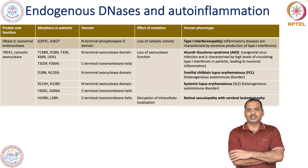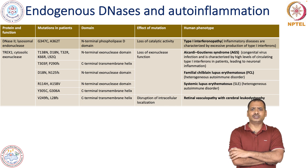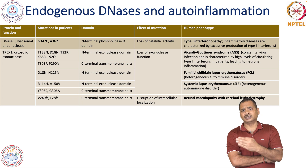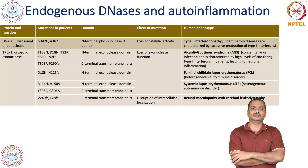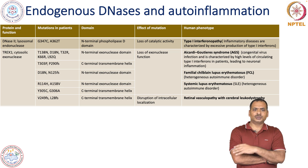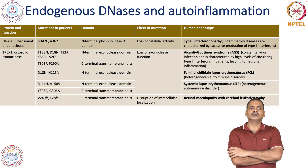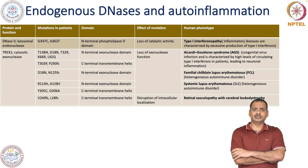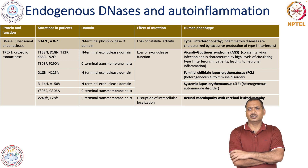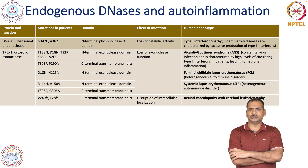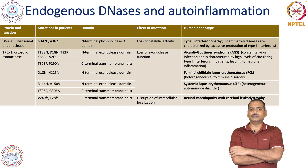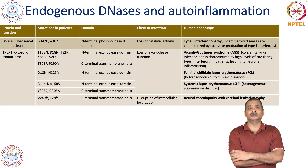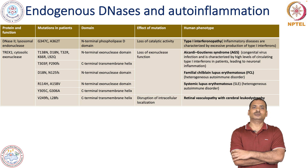Aicardi-Goutières syndrome is characterized by high levels of type 1 interferon in patients, leading to neuronal inflammation. Some of the mutations shown in this table result in familial chilblain lupus erythematosus (FCL), a heterogeneous autoimmune disorder. Other mutations also lead to systemic lupus erythematosus (SLE).